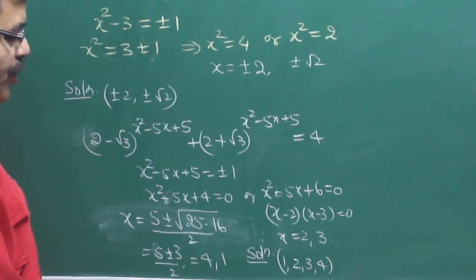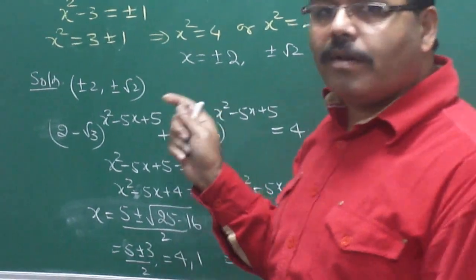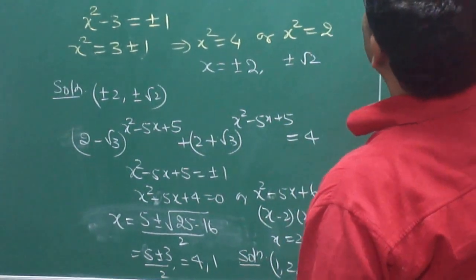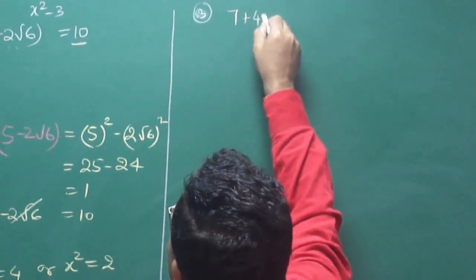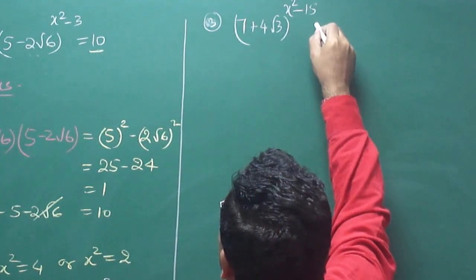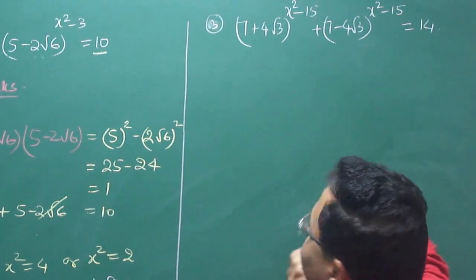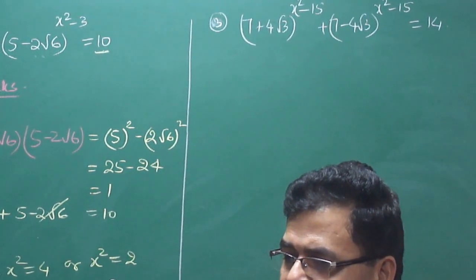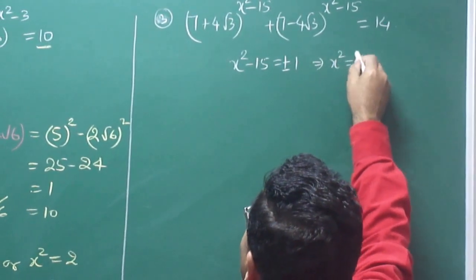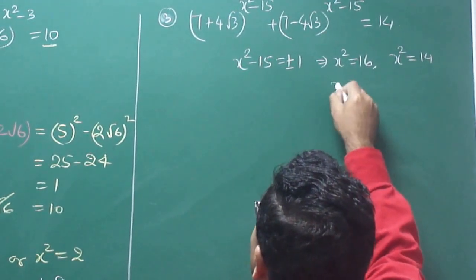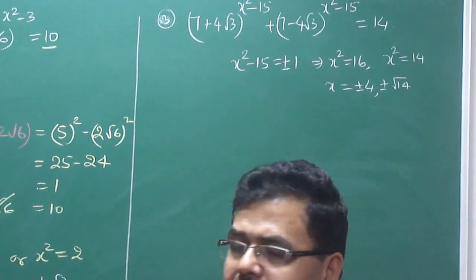All four answers come out. This is the method to solve all such questions. Let's take a third question: (7 + 4√3) to the power (x² − 15) plus (7 − 4√3) to the power (x² − 15) = 14. Put the power equal to ±1: x² − 15 = 1 gives x² = 16, and x² − 15 = −1 gives x² = 14. So x = ±4 and x = ±√14. Solution obtained.